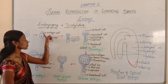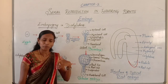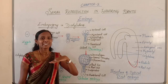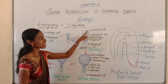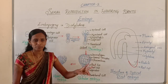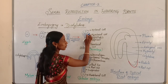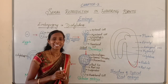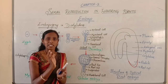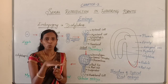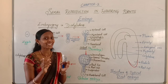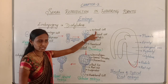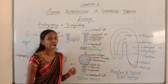Now, this embryonal cell undergoes divisions — two vertical divisions and one transverse division — resulting in the formation of eight cells arranged into two tiers. This stage is called the octant stage, as the embryo contains eight cells. The outer tier of cells is called epibasal cells and the inner tier of cells is called hypobasal cells.